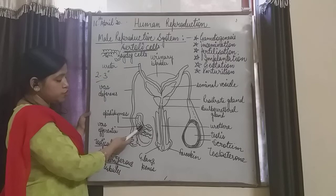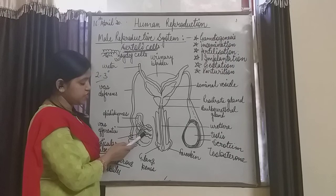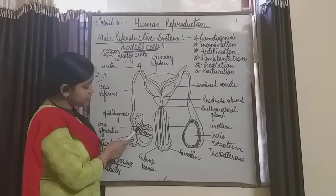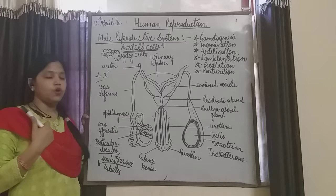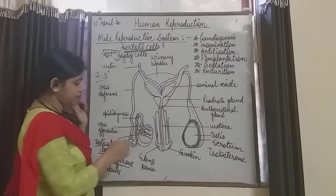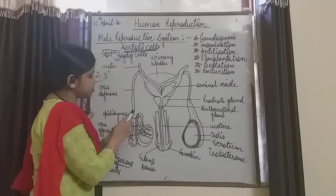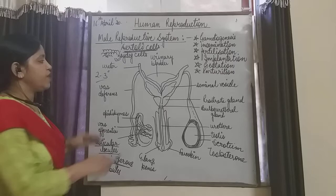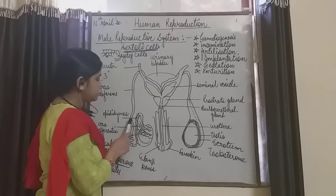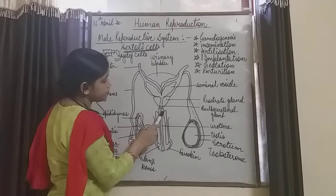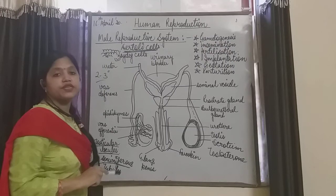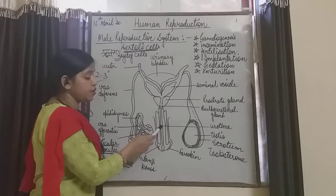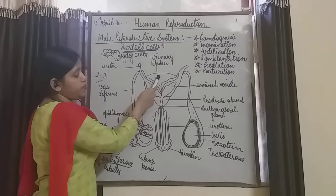Many coiled tubes are present called vas efferentia. These tubes carry the sperms from the testes and release them into the epididymis. The epididymis stores the sperms for some time. Transportation of sperms then takes place through the vas deferens, which starts from the epididymis and joins the urethra. The urethra is part of both the urinary system and the reproductive system. The urinary bladder is connected to the vas deferens by means of the urethra.